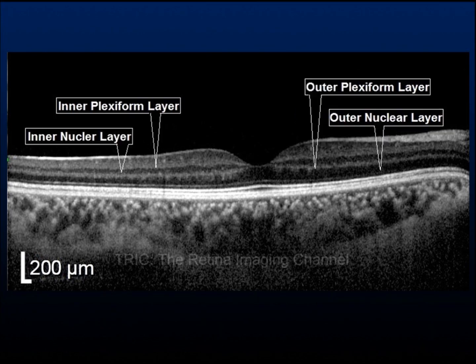Next there are striations which make the retina a banded structure on OCT. There are two hyperreflective bands and two hyporeflective zones. Starting from the inner side of the retina, the first hyperreflective band is the inner plexiform layer, which is followed by a hyporeflective zone which is the inner nuclear layer. They are followed by the hyperreflective outer plexiform layer and the hyporeflective outer nuclear layer.